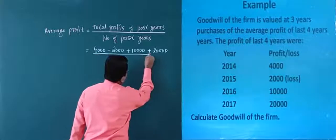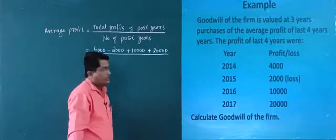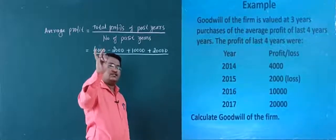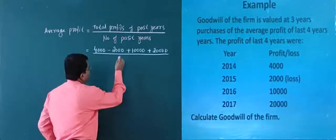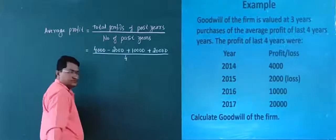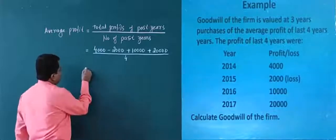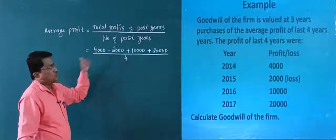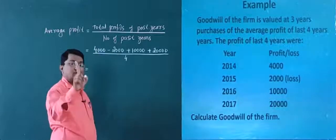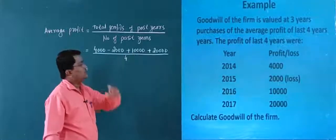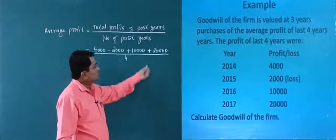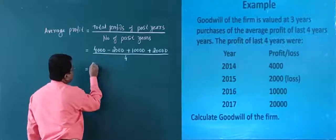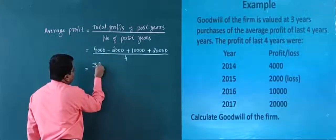Divide by number of past years. How many years are there? 1, 2, 3, 4 — that is 2014, 2015, 2016, and 2017. Four years are given, so number of years is 4. Now make the total of all the profits: 4,000 minus 2,000 equals 2,000. 2,000 plus 10,000 is 12,000. 12,000 plus 20,000 is 32,000. So the total of all these is 32,000.